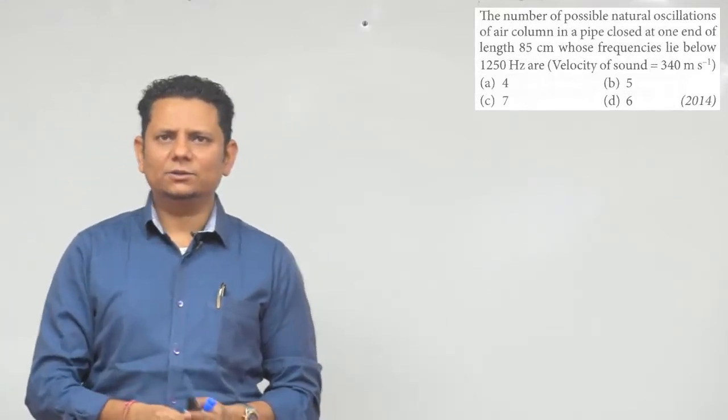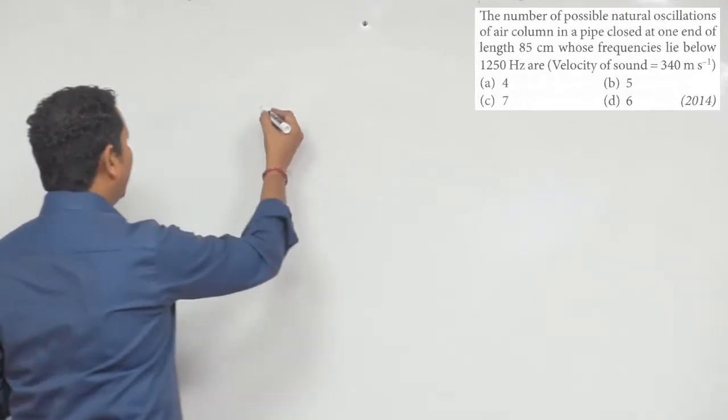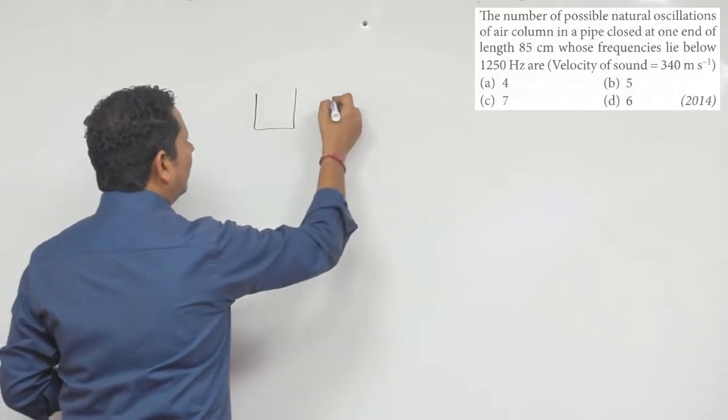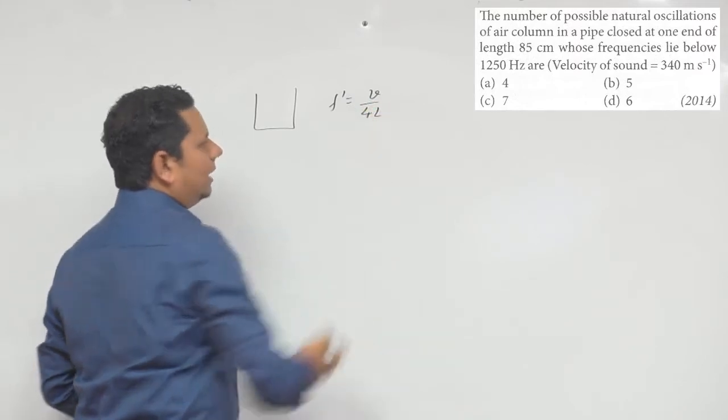Again simple question, basics will happen. So when we talk about closed organ pipe, this is your closed organ pipe, which is closed and open. The fundamental frequency we know is V divided by 4L, which is your frequency.